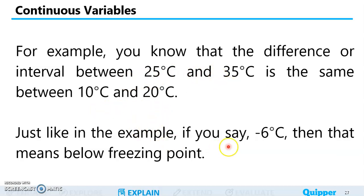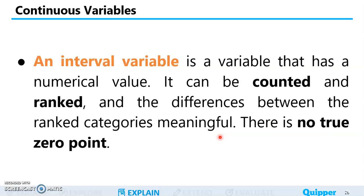However, if you say negative 6 degrees Celsius, then that means below freezing point. When you say zero degrees Celsius, it doesn't mean there's no temperature, absence of temperature. It only means that is really, really cool, that is the freezing point. So that zero degree Celsius, the zero value, is not really the true zero meaning absence of temperature. So this is interval variable.